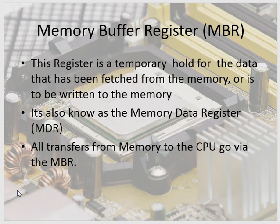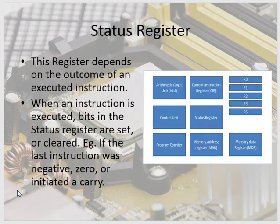Data will be copied from memory into the MBR and then copied into whatever register it needs to go into. The status register depends on the outcome of an executed instruction — when an instruction is executed, bits in the status register are set or cleared, for example if the last instruction was negative, zero, or initiated a carry.